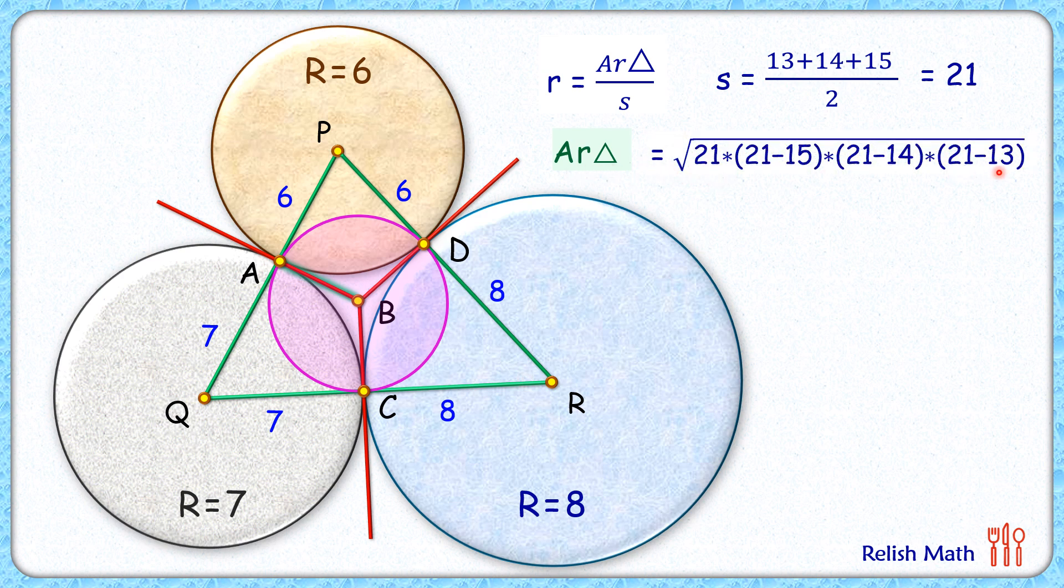Now putting the value of area as 84 and semi-perimeter as 21, the inradius value will be 84/21. Solving, we get the value of inradius as 4 cm, or the value of AB which we had to find as 4 cm. That's our answer.